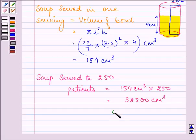That is equal to 38,500 cm³, or to convert it into liters, we have the answer as 38.5 liters. As we know, 1000 cm³ is equal to 1 liter.